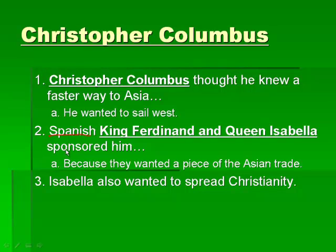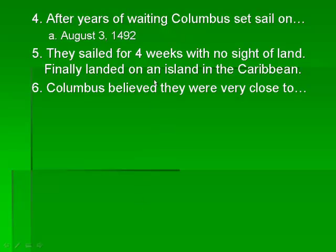So Christopher Columbus goes to the Spanish King Ferdinand and Queen Isabella, and they sponsor him — give him money — because they wanted a piece of the Asian trade and Spain was having no success in their exploration. They wanted to take a chance on Christopher Columbus. Isabella also wanted to spread Christianity, which we'll talk about in a later slide. After years of waiting, Columbus set sail on August 3rd, 1492.